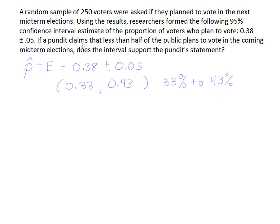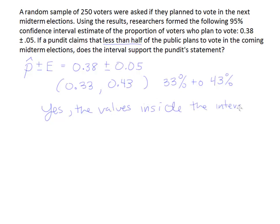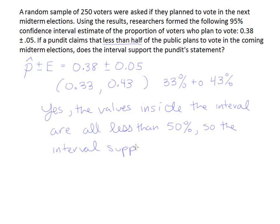Now let's address the question. A pundit claims that less than half of the public plans to vote in the coming midterm elections — does the interval support that statement? Yes, it does. Less than half means under 50%, and this interval includes values that are all under 50%. So the values inside the interval are all less than 50%, and the interval supports the claim.